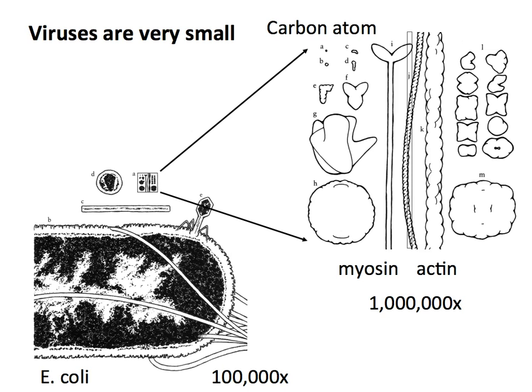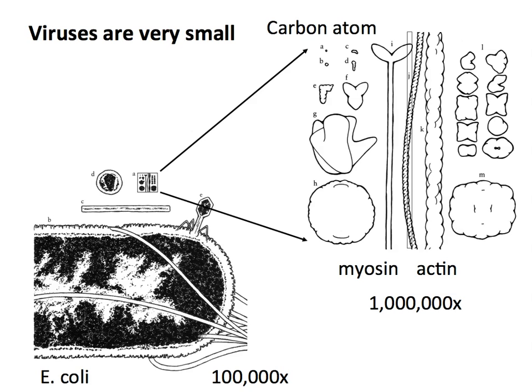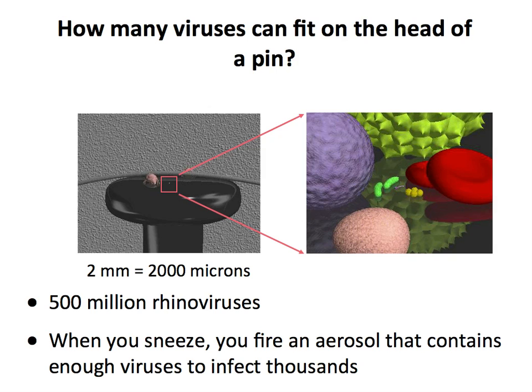Here are some cellular molecules — myosin and actin — to give you an idea. This is now magnified a million times. The answer to the age-old question 'how many viruses can you fit on the head of a pin?' — if you're talking about the common cold virus, about 500 million. So every time you sneeze, you fire an aerosol that has a lot of virus particles. Every droplet you make when you sneeze has about 20,000 virus particles in it.